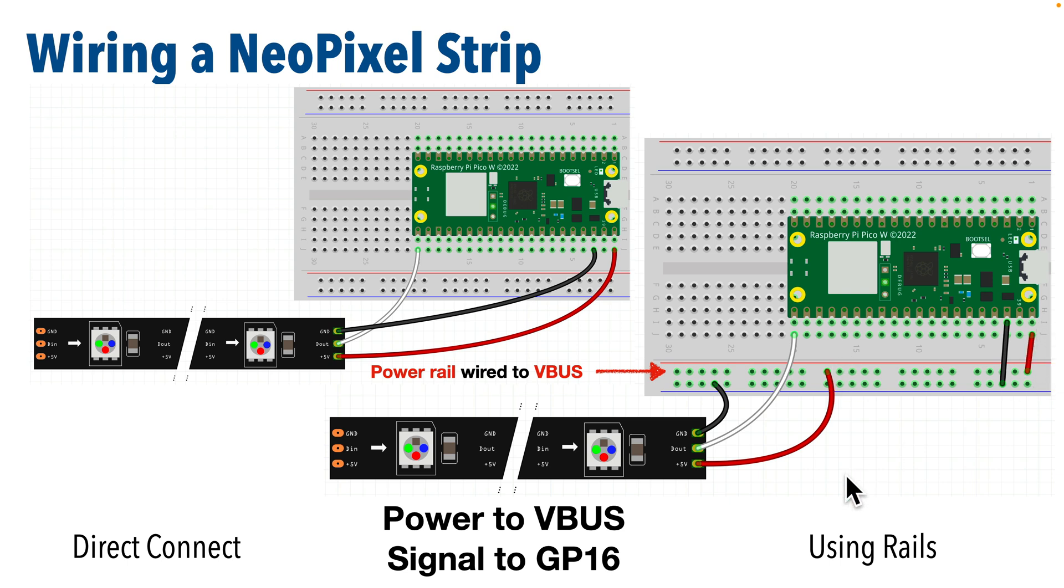You know your wiring is correct if you can trace your connection from component to board. For example, if I start at this ground on the NeoPixel strip, I head to the rail then move along the rail horizontally until I reach this ground wire which connects me to one of the ground pins on the Pico. Same thing for the power wire on the NeoPixel. It takes me to this power rail. I run along the rail until I get to this wire which takes me to the V bus power on the Pico.